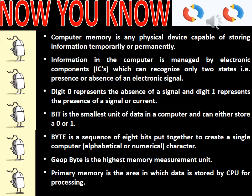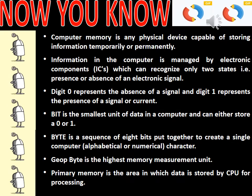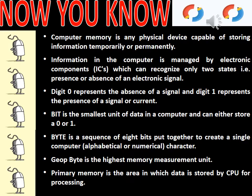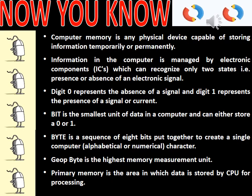Chapter revision. First, computer memory is any physical device capable of storing information temporarily or permanently. Second, information in the computer is managed by electronic components that can recognize only two states — presence and absence of an electronic signal. Third, digit 0 represents the absence of a signal and digit 1 represents the presence of a signal. Fourth, a bit is the smallest unit of data in a computer and can either store a 0 or 1. Fifth, a byte is a sequence of 8 bits put together to create a single computer character. Sixth, geobbyte is the highest memory measurement unit. Seventh, primary memory is the area in which data is stored by the CPU for processing.